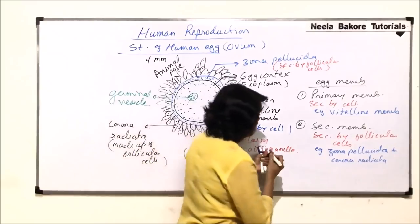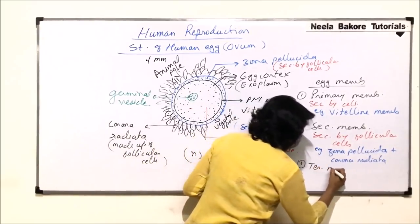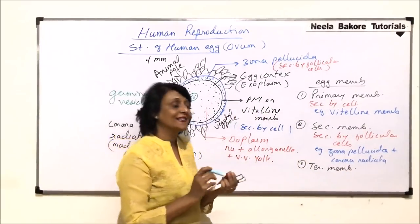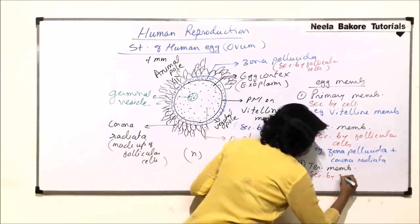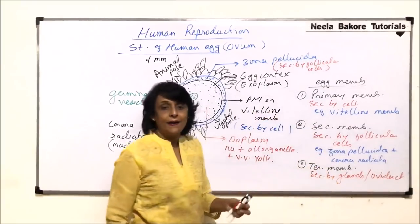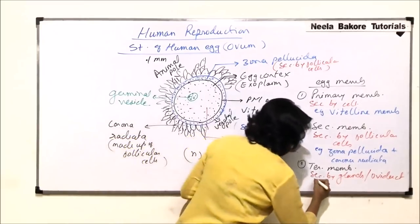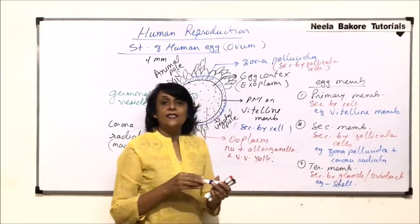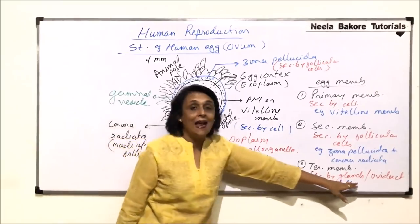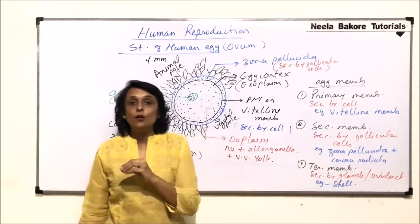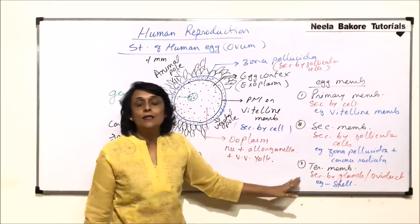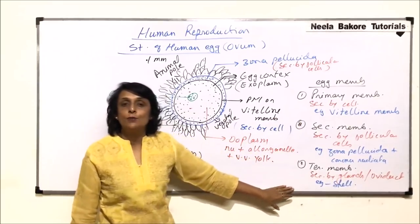The third category is tertiary membranes, which are secreted by certain glands, especially in the oviduct region. The example here is the shell. Many eggs have a shell around them, and the shell is secreted by a gland called the shell gland, located towards the end of the oviduct. It serves as an outer protective layer. This is how egg membranes or egg envelopes are classified: primary secreted by the cell, secondary secreted or made of follicular cells, and tertiary secreted by glands in the oviduct.